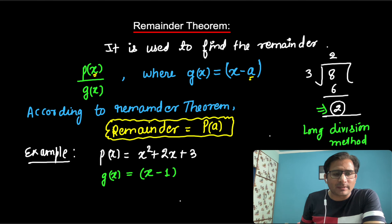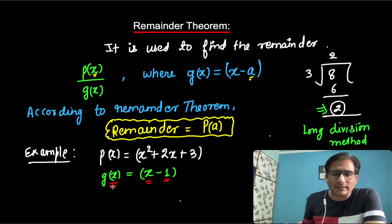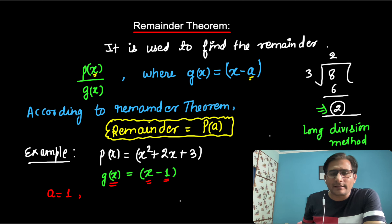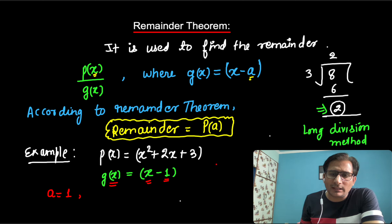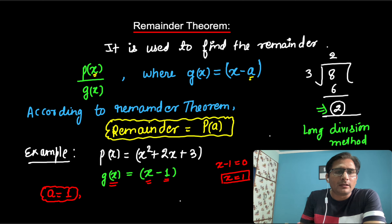If you compare the divisor with the form x minus a, then a is equal to 1. There is another method also to find the value of a: we put the divisor equal to 0, and the value of x obtained is the value of a. So here, a is equal to 1.